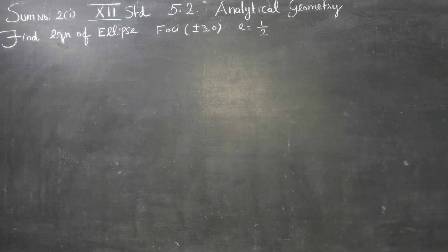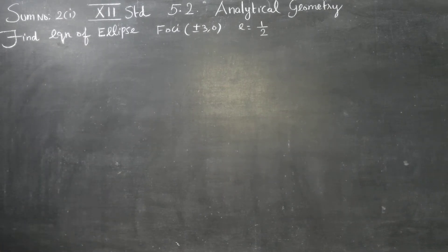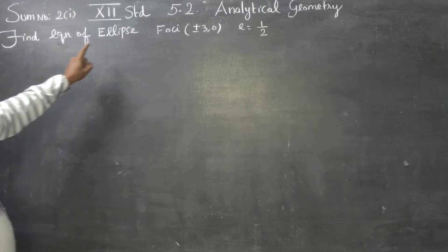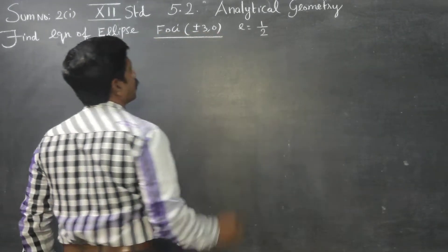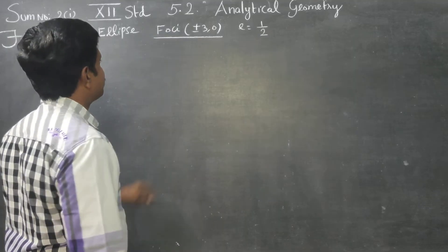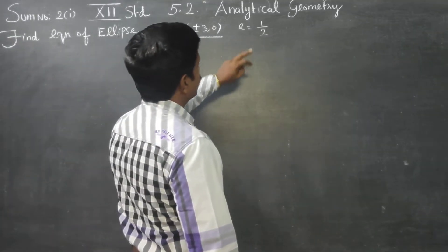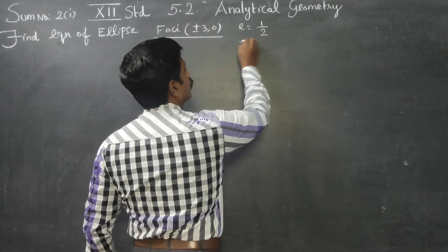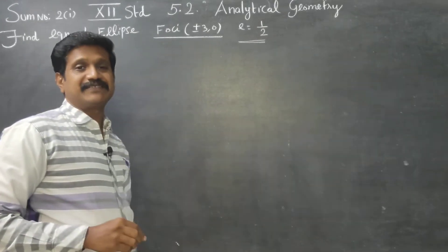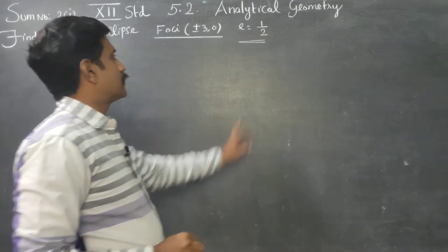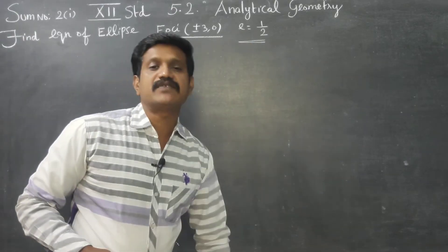Dear 12th standard students, in exercise number 5.2 on analytical geometry, find the equation of ellipse given foci plus or minus 3 comma 0, and e is equal to 1 by 2. E is called eccentricity, a constant eccentricity.